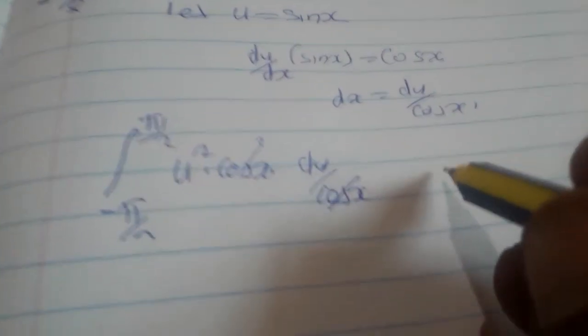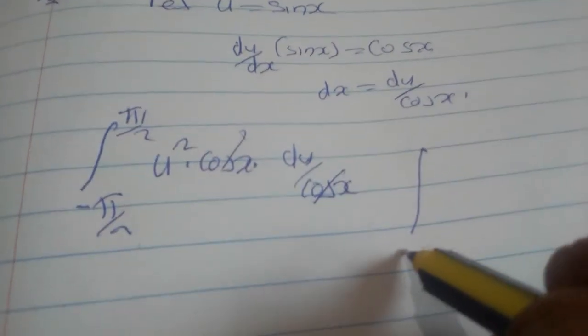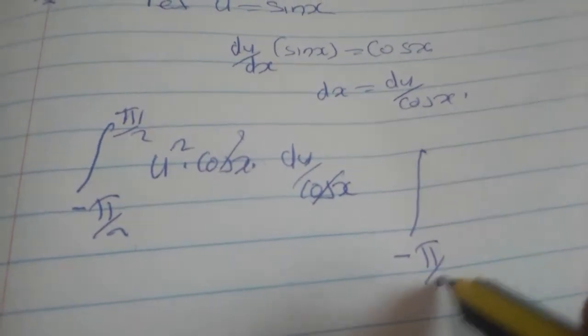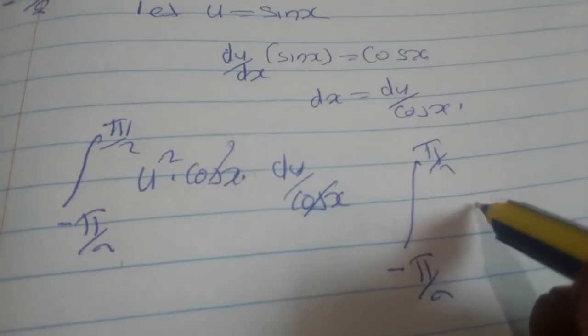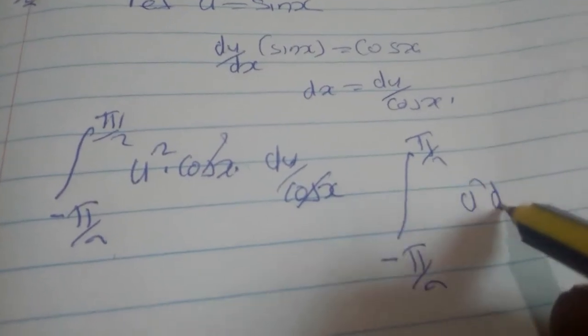So we are going to remain with the integral from negative π over 2 to π over 2 of u² du.